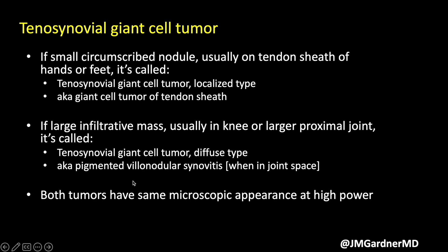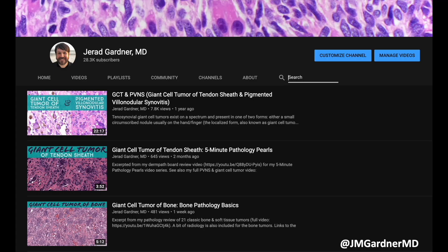If you do derm path only, you're basically never going to see the diffuse type — you'll only see giant cell tumor of tendon sheath in its localized form, and even then only rarely. The reason I bring them up is they're the same tumor with different presentations and different growth patterns, but at higher power they look identical — made up of the same kind of cells. I have videos about all of that which go over it in detail if you need to see that.